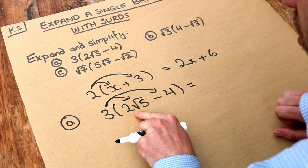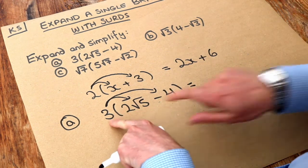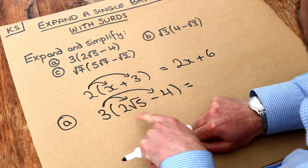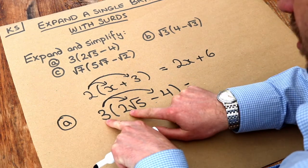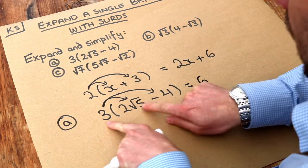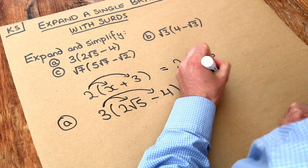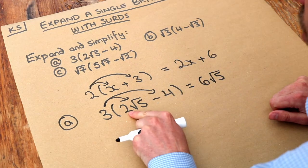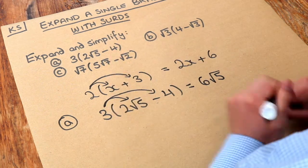Well what's 3 times 2 root 5? Well remember in a previous video when we multiply two things together involving surds we first multiply the non-surds together. So the 3 times the 2 is 6 and then we multiply the surds together. Now the only surd here is the root 5 so we just have root 5. Or to think about this another way, if we have two lots of root 5 and we times that by 3 we then have six lots of root 5.